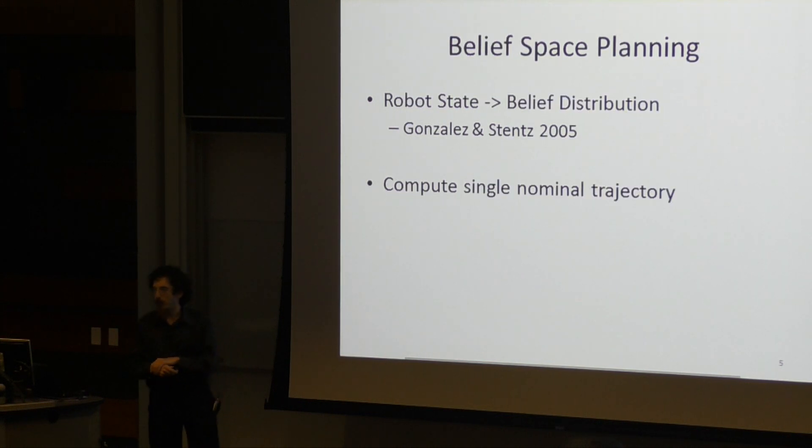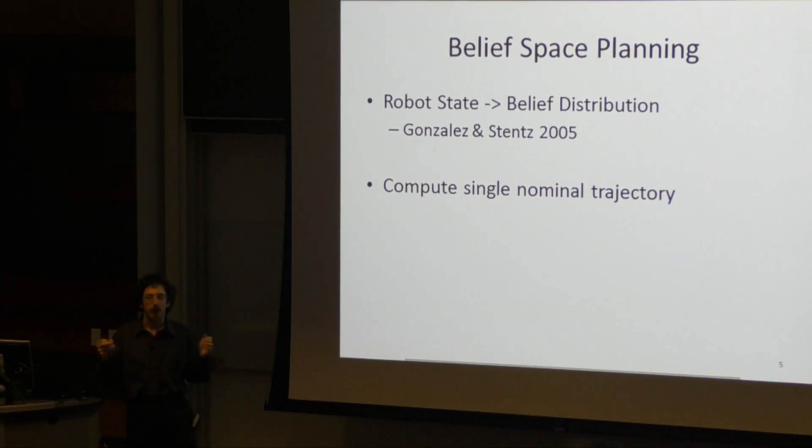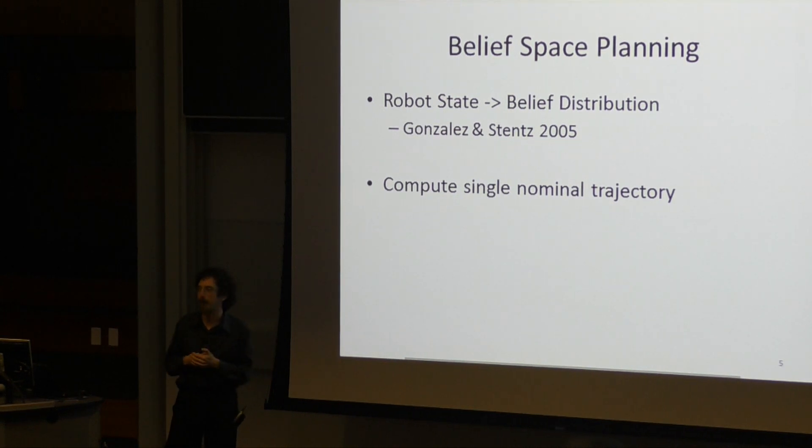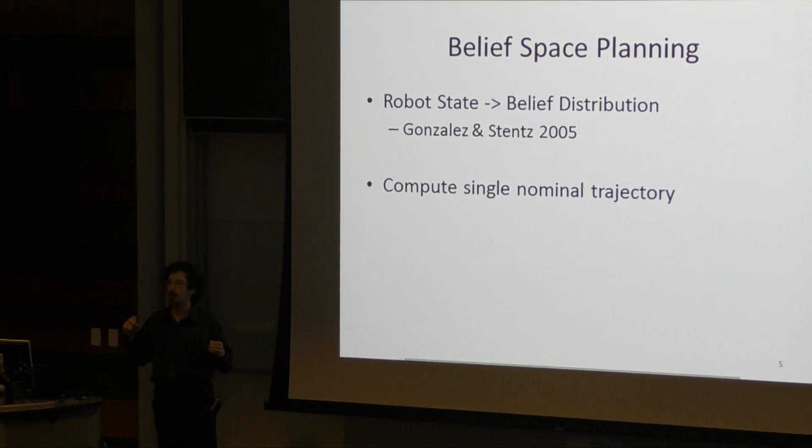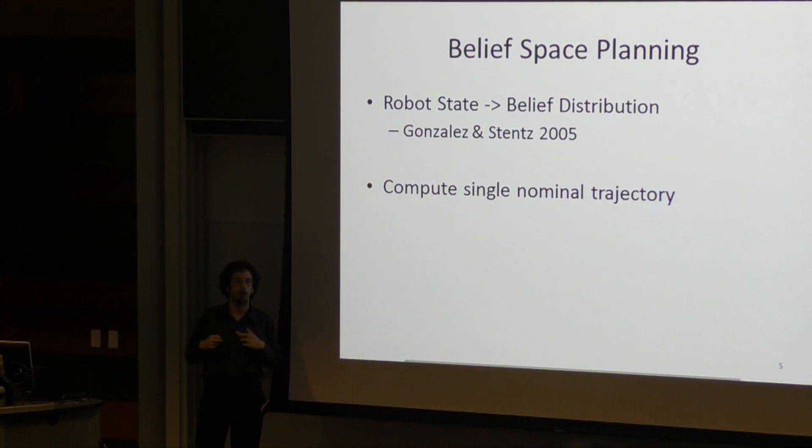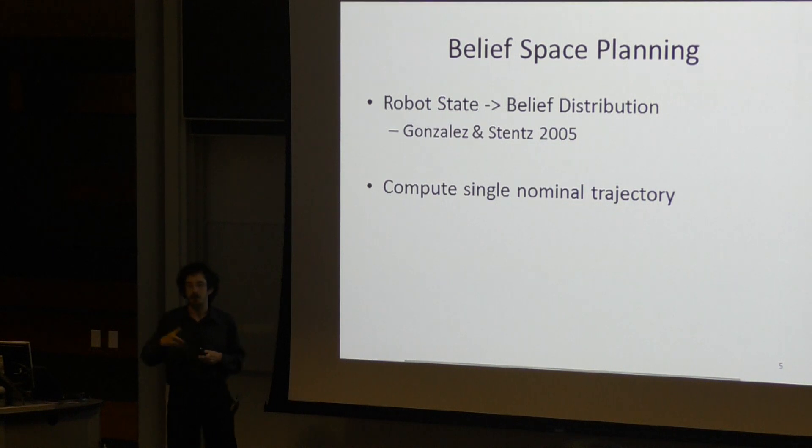The single agent path planning community has been dealing with the problems of POMDP before, and they developed an approach that I'll call belief space planning. The idea behind belief space planning is you take a regular single robot path planning algorithm, but then instead of tracking the position of the robot, you track a belief state as to where that robot might be and just plan for that under the resulting belief dynamics.